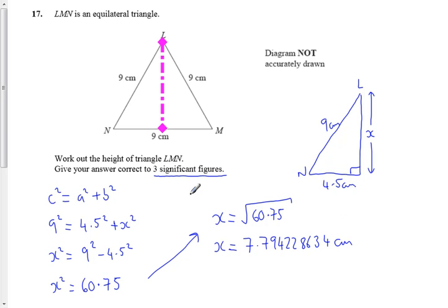We want three significant figures. That just means we want the three first digits. So x is equal to 7.79 centimeters, and it's rounded to three significant figures. End of question.